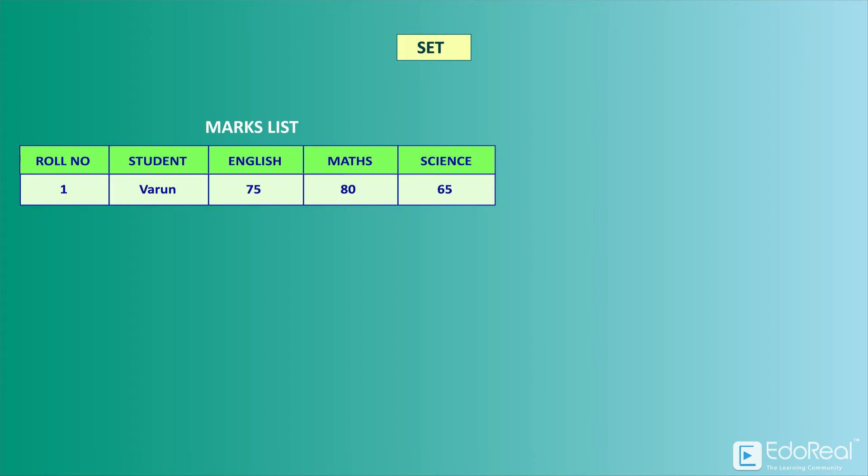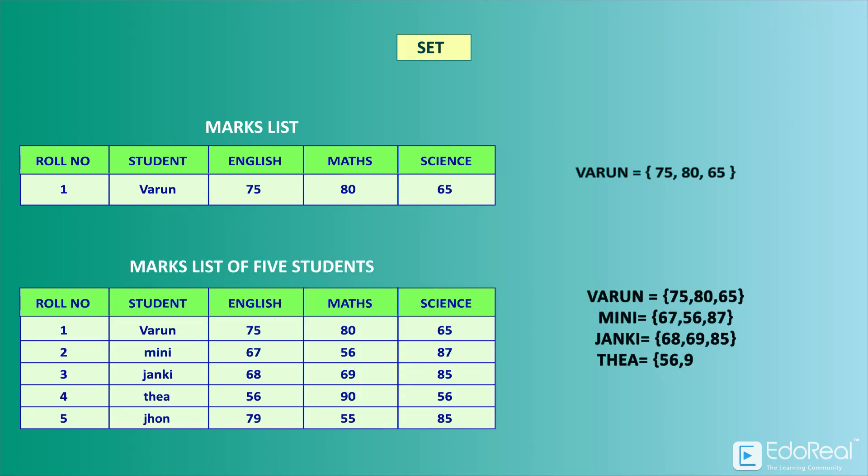Let us assume the marks list of a student, having name Varun, is placed in a table form. The list of marks forms a set. In the same way, a table consisting of marks list of 5 students forms 5 sets.